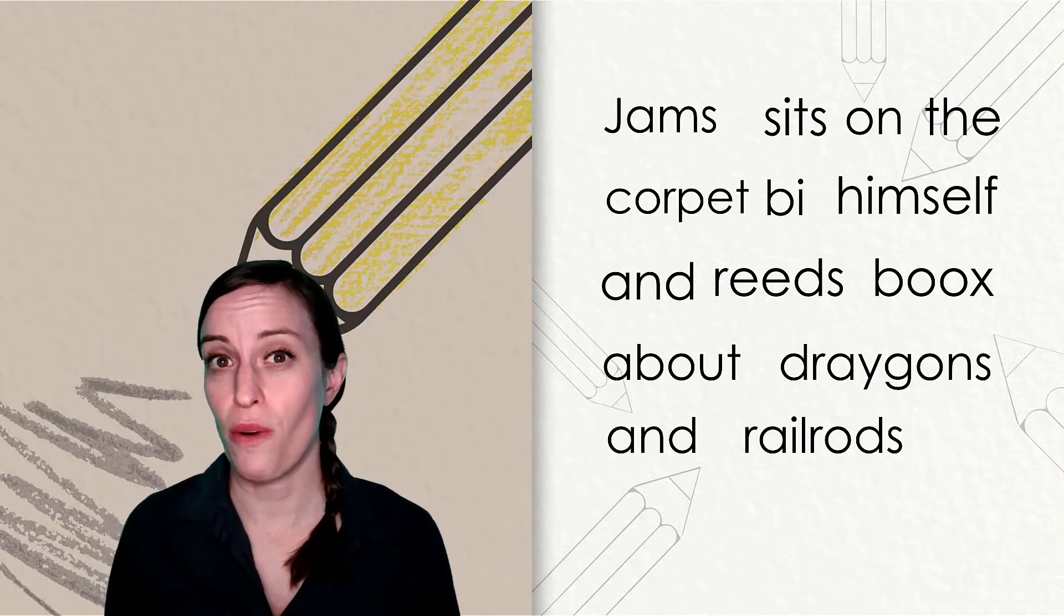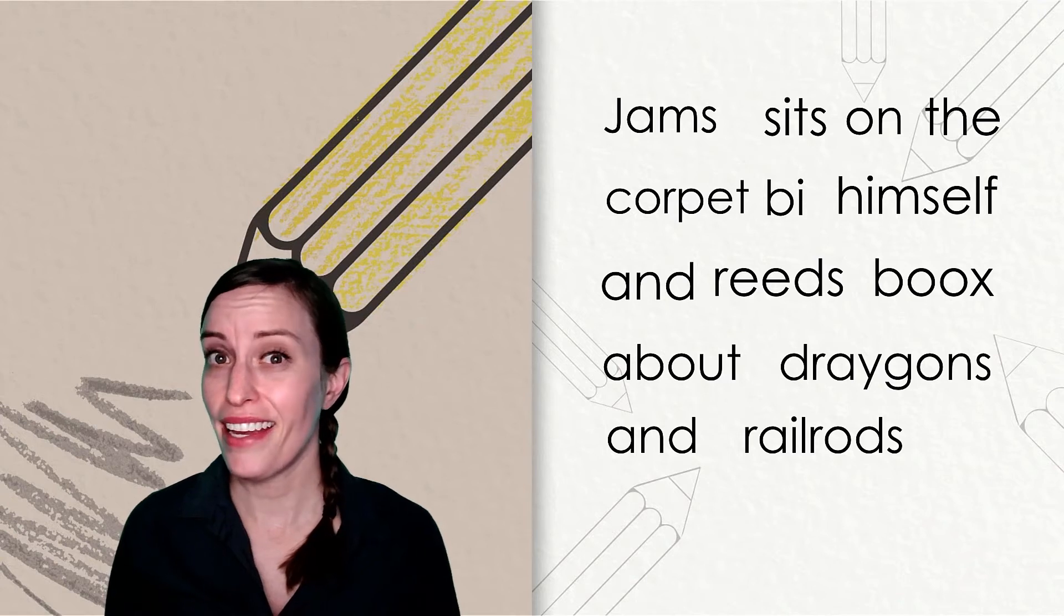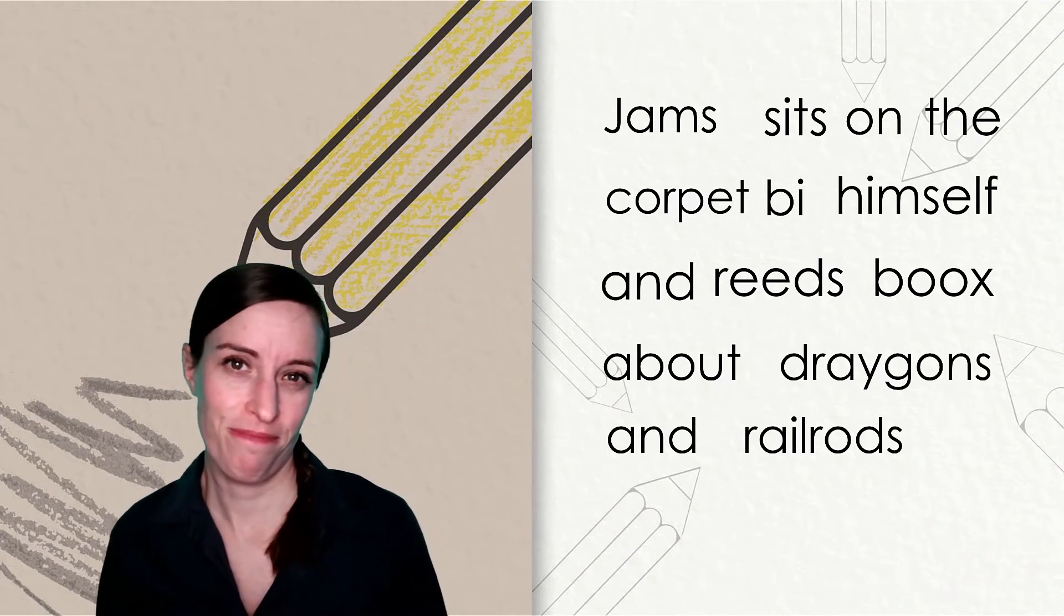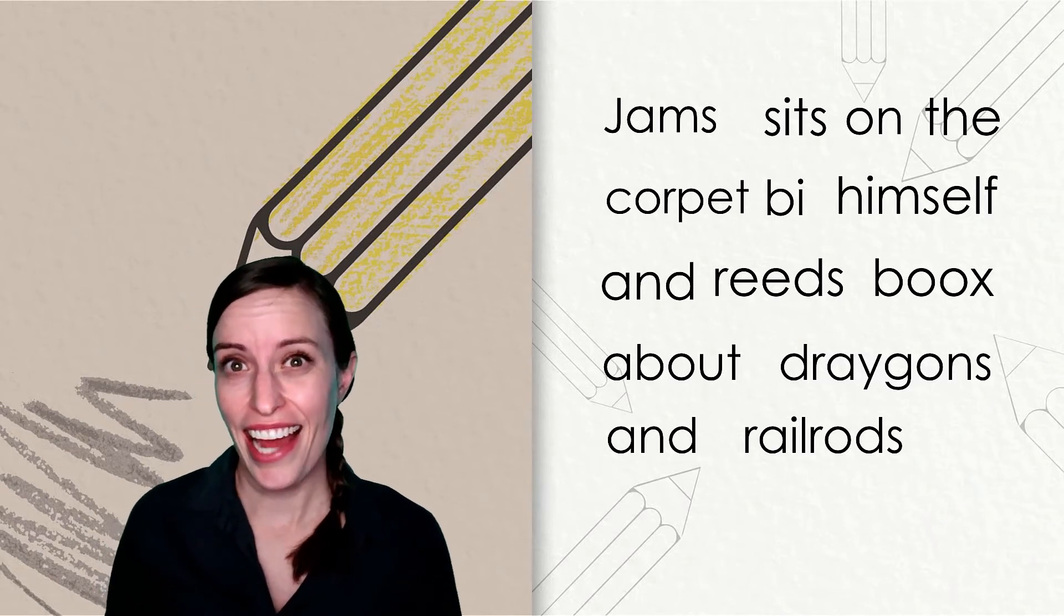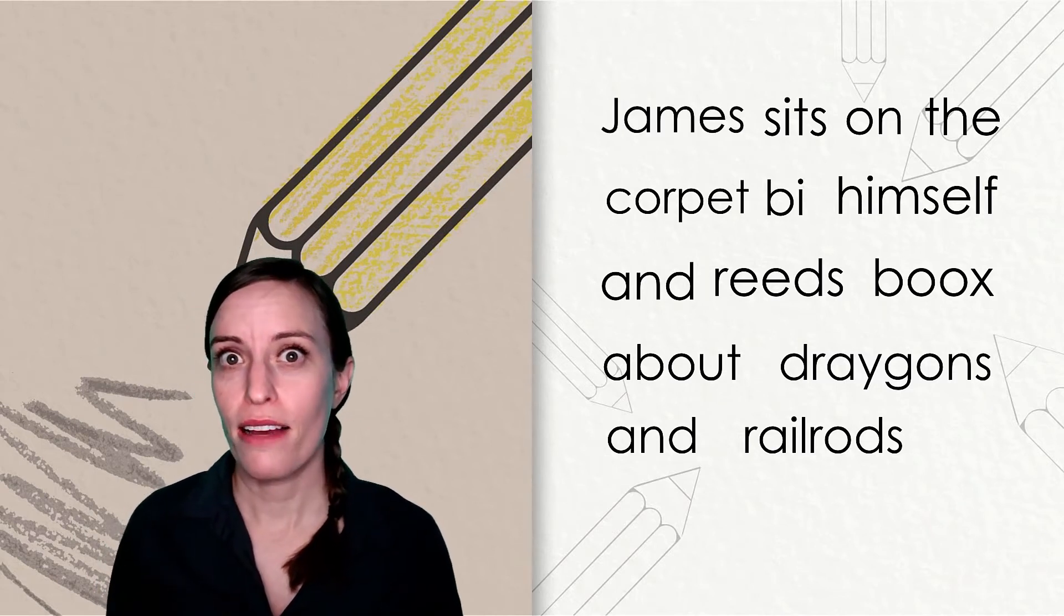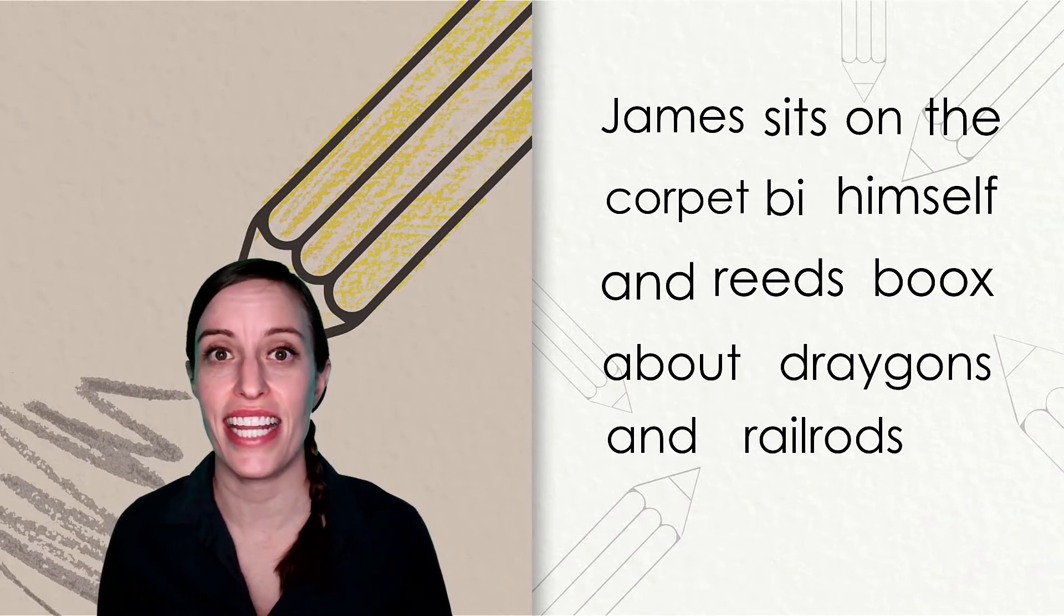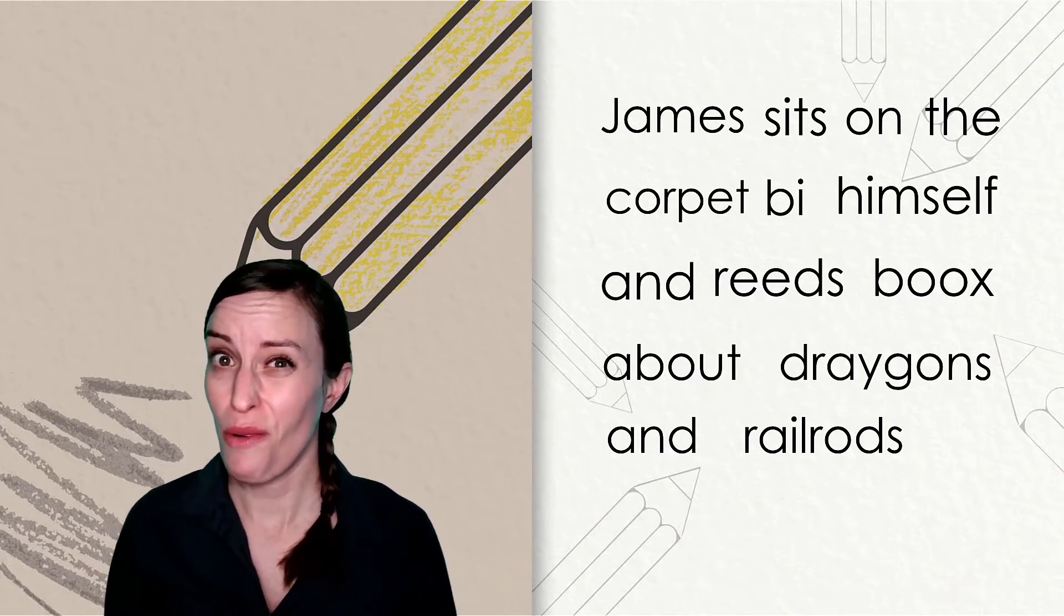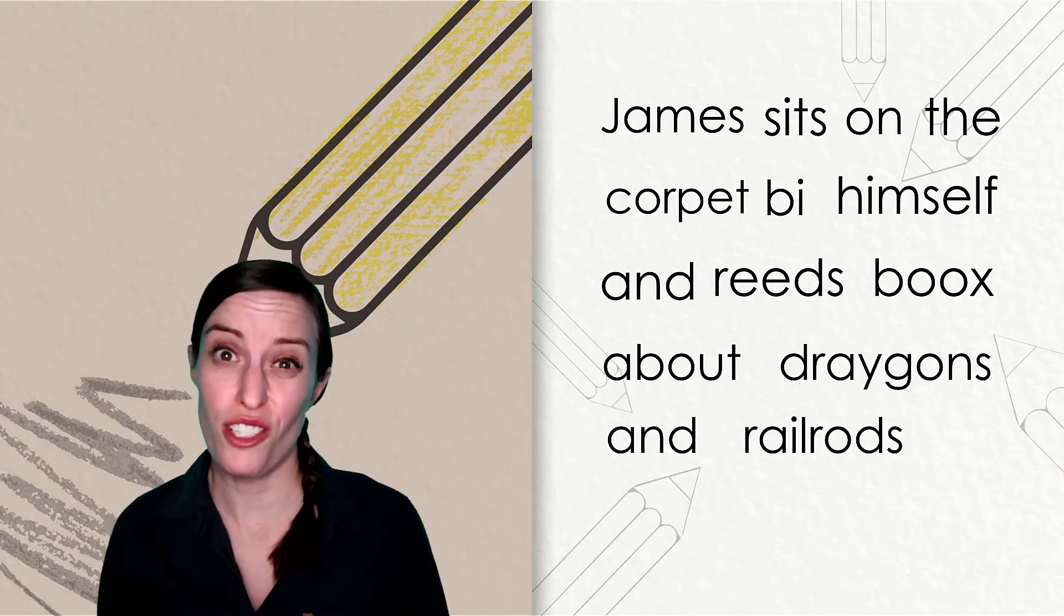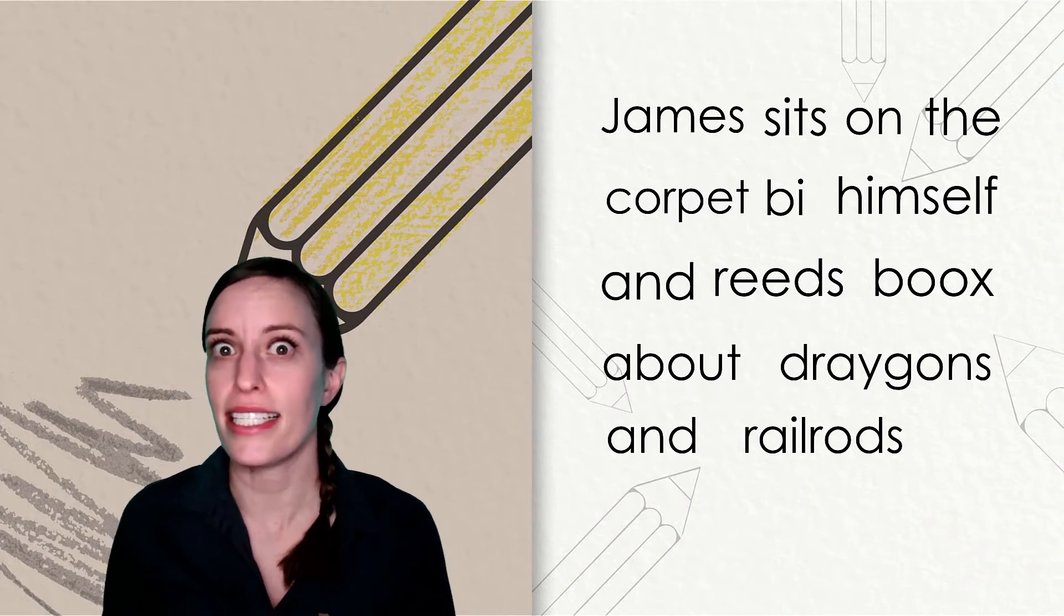How can we change the word jams to make it have a long A sound? We could add a magic E before the final S. Now this says the name James. We need a capital letter since it's the first word in a sentence and it is a character's name.